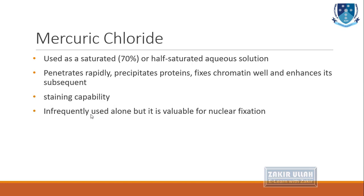Mercuric chloride is another fixative used in the histopathology laboratory, used as a 70% saturated or half-saturated aqueous solution. Its advantages are that it penetrates very rapidly into tissues, precipitates protein, fixes chromatin and nuclear material, and has good staining capability. It cannot be used alone but is very valuable for fixation of nuclear material.